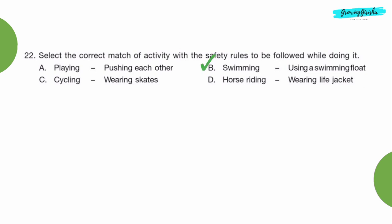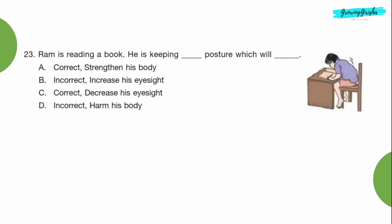Question 23: Ram is reading a book. He is keeping dash posture which will dash. Option D, incorrect, harm his body.